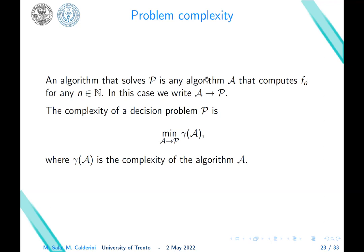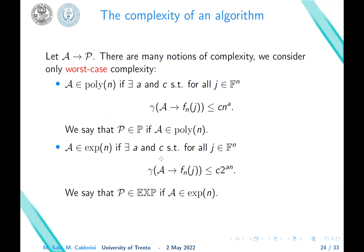Now, an instance of P is any string j that we want to assess. So j can be a yes-instance if f_n(j) = 1, where of course n is the number of bits of j. And j is a no-instance if f_n(j) = 0. So this map f_n from F^n to F, we can think of as: given a vector of bits, we say yes or no. That's why a decision problem. Now, an algorithm that solves P is, by definition, any algorithm A that is able to compute f_n for any n. So if you want to know if an instance is yes or no, you can apply the algorithm A.